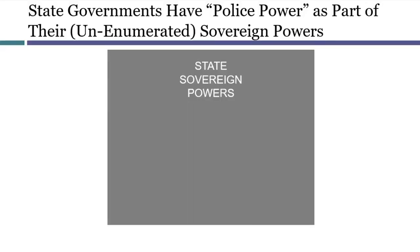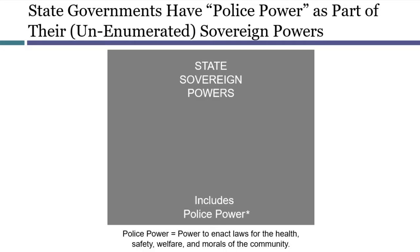One barrier to understanding the Lochner-era freedom of contract cases is that they use the concept of police powers differently than we do today. To avoid being confused when reading these cases, you should focus on the main idea, which is that freedom of contract was considered to be a constitutionally protected right. The idea of the police power was really a subsidiary idea, with the main idea being freedom of contract. States are not limited to a list of enumerated powers — they have the ability to make laws on any subject. This ability is often referred to today as the police power: broadly, the power to enact laws for the health, safety, welfare, and morals of the community.